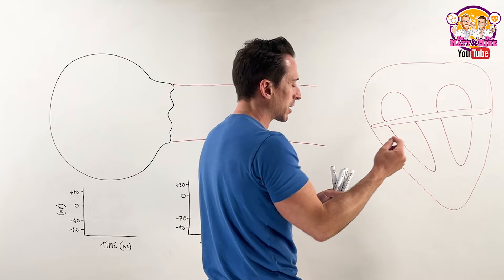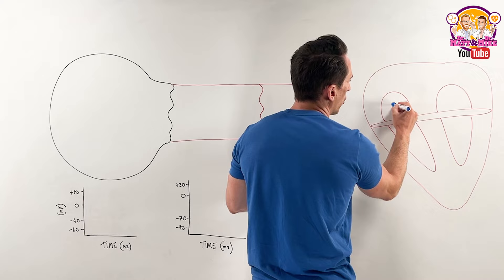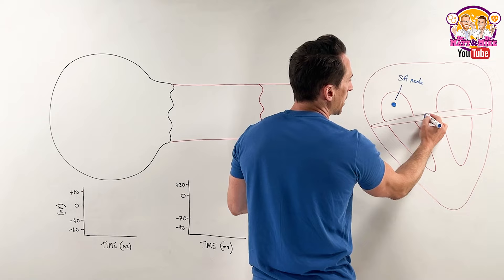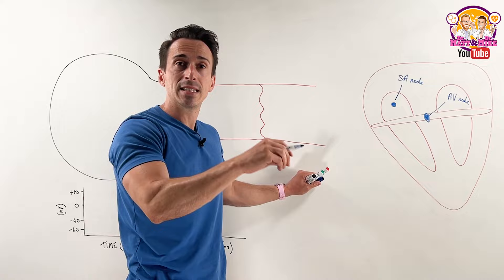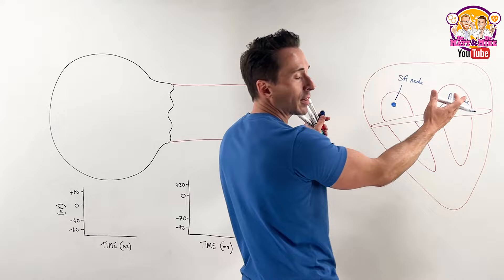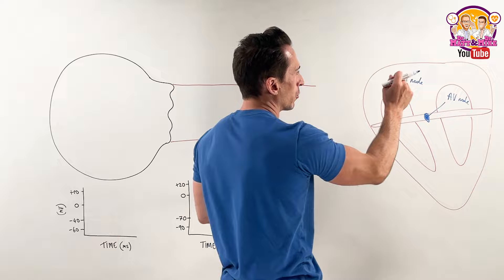We also have conductile cells. The conductile cells include those of the SA node - which stands for sinoatrial node - and we've got the AV node, which is the atrioventricular node. These two types of cells are known as conductile cells. They send signals and basically set the rate and rhythm of the heart, spreading that action potential throughout the tissue of the heart.